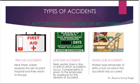Now we will study some types of accidents. First, categories according to length of recovery. The first type is first aid accidents, where workers receive first aid at the plant hospital and then return to the job. The second type is lost time accidents, where a worker loses a day or shift in which the accident occurs and compensation is given by the employer. The third type is home case accidents, where the worker loses the remainder of the shift on which the accident occurred.